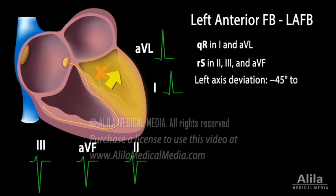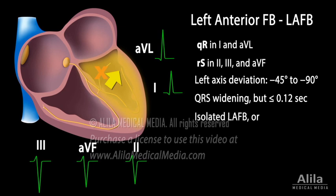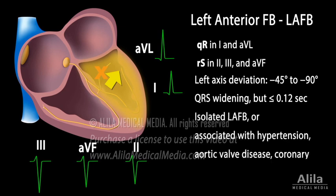The cardiac axis is skewed left compared to normal conduction. Also, as one fascicle is doing the job of two, it takes slightly more time than usual, resulting in a small widening of the QRS complex, not more than 0.12 seconds. LAFB may occur as an isolated finding or in association with cardiovascular diseases. Isolated LAFB was thought to be benign, but has recently been linked to higher risk for heart diseases.